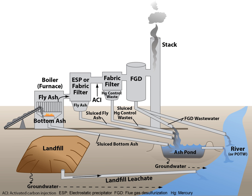Industrial wastewater treatment describes the processes used for treating wastewater that is produced by industries as an undesirable by-product. After treatment, the treated industrial wastewater may be reused or released to a sanitary sewer or to a surface water in the environment. Most industries produce some wastewater. Recent trends have been to minimize such production or to recycle treated wastewater within the production process.